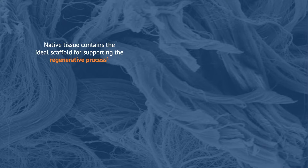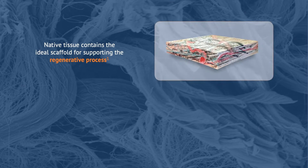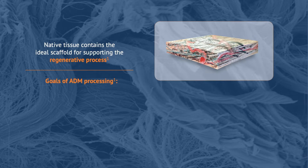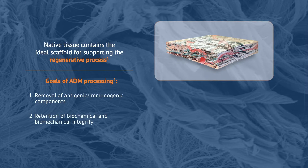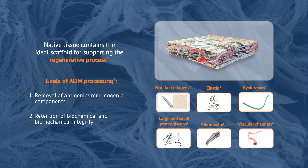Native biologic tissue contains the ideal scaffold to support the regenerative process, which, as you recall from our first video, should be the goal in surgical wound healing. When we process biologic tissue to make an ADM, we do so with two distinct goals in mind. The first goal is to decellularize the matrix to remove antigenic and immunogenic components — this helps to minimize the inflammatory response upon implantation. The second goal is to preserve critical biochemical and biomechanical properties of the extracellular matrix, or ECM.